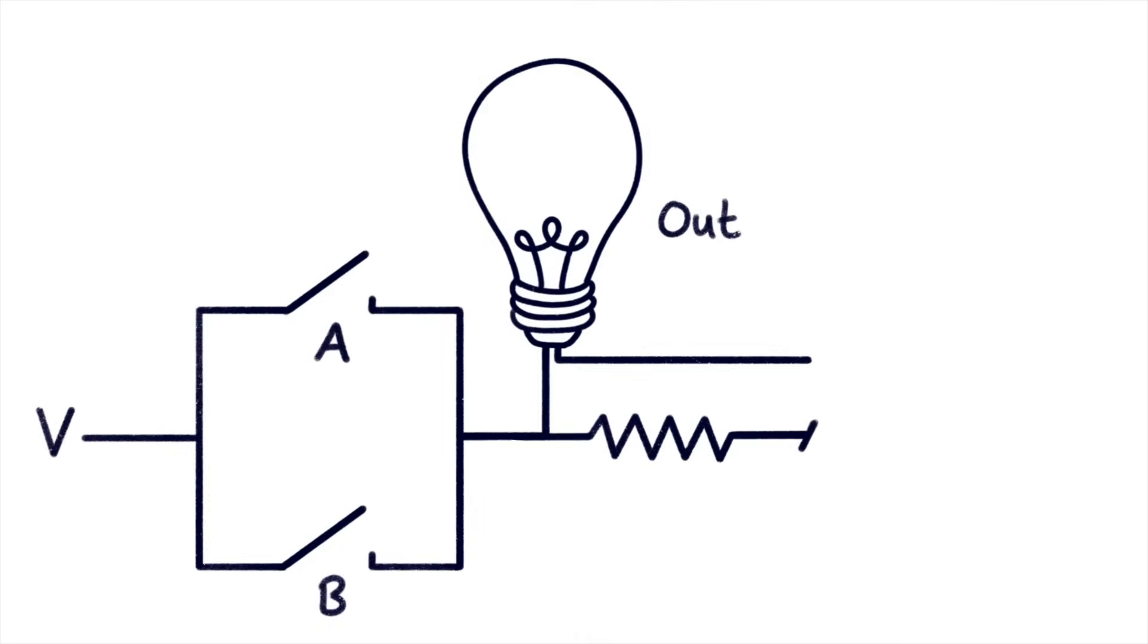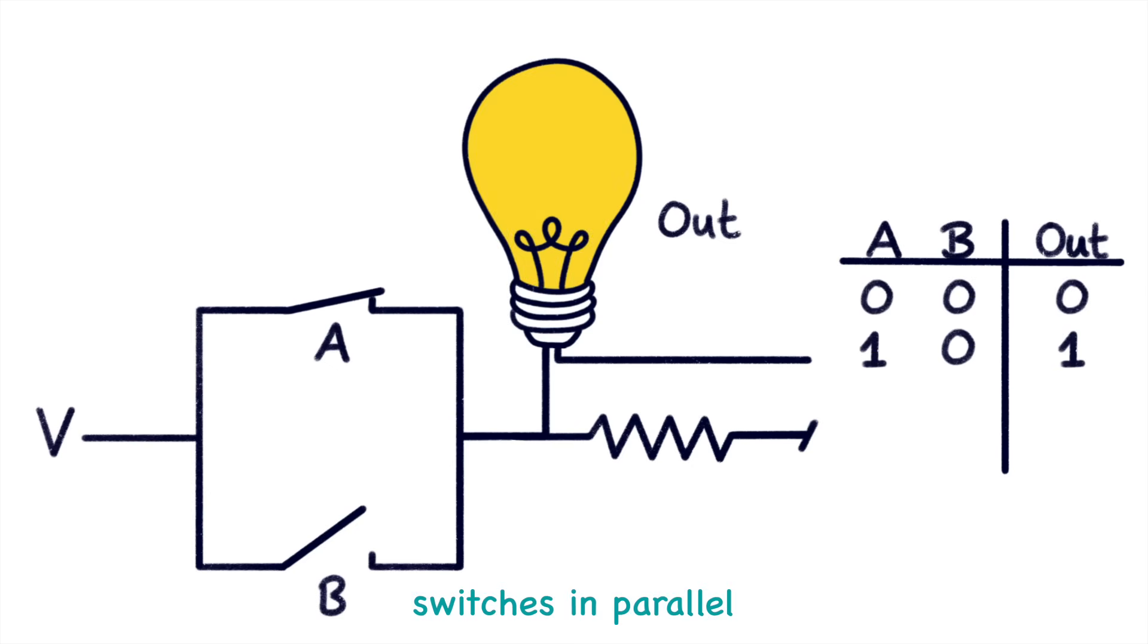Similarly, we can also construct a gate with two switches in parallel. In this setup current can reach the light bulb if at least one of the switches is closed. Hence X is 1 if either A or B or both have value 1, which is why this is called an OR gate.